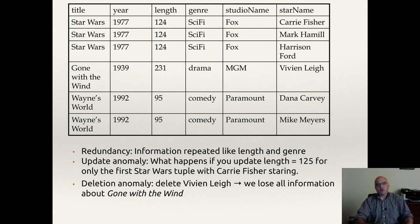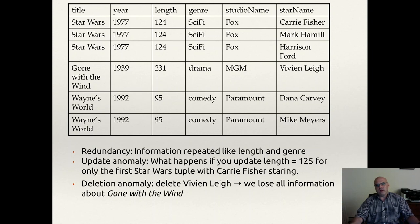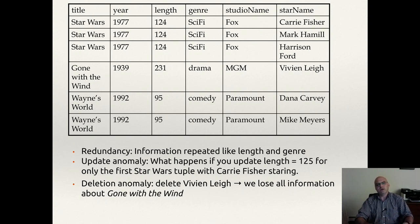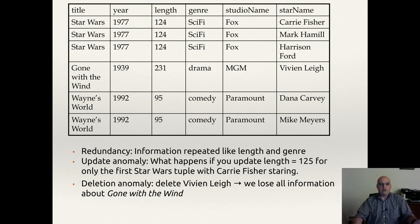A deletion anomaly is a little bit different. For a deletion anomaly, consider the Gone with the Wind row — we want to delete Vivian as an actor. We just want to remove her, not delete the whole row. But remember, the key is title, year, and star name. So if we delete her, we're deleting part of the key, which makes the whole tuple invalid, meaning we lose studio name, genre, and length. The whole movie is gone. All we wanted to do was remove Vivian from the movie, but we've ended up losing Gone with the Wind entirely.